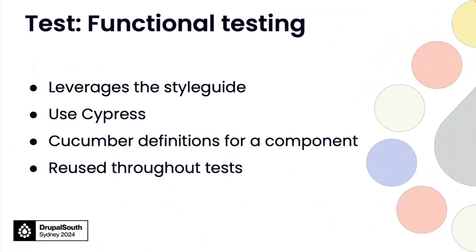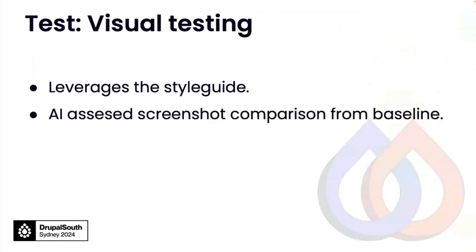We currently have a beta Cypress feature where for every single URL you hit with Cypress, you can do the functional tests but you can also get accessibility results straight out of that without any additional work. We use those as well.